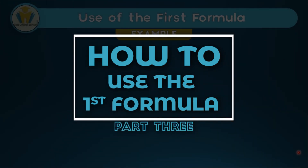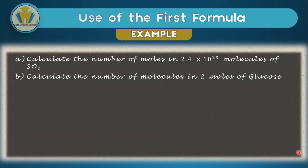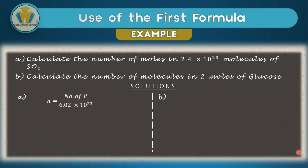Now let's talk about how we can use the first formula. The first formula is the easiest to use of all three formulas we've looked at in this lesson, and for that reason it's been added to this video. The other two will be looked at in a later video. In the first equation, we've been asked to calculate the number of moles in 2.4 times 10 to the power 23 molecules of sulfur dioxide, shown as SO₂. Since we're using our first formula, we're just going to substitute the number of molecules we've been given. N will be equal to 2.4 times 10 to the power 23 divided by Avogadro's constant.